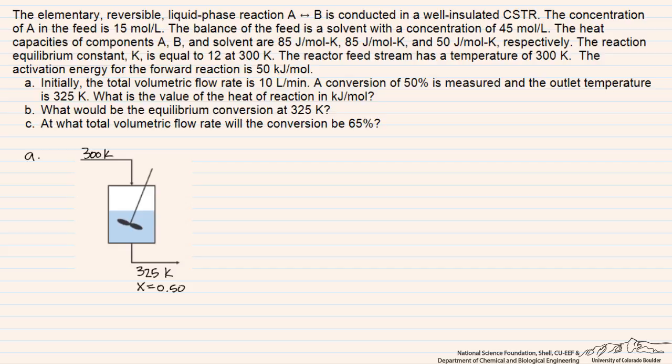We can write an energy balance for an adiabatic reactor in the following form. Here we have the sum of θ_i·C_Pi over the negative heat of reaction times the temperature difference between the inlet and outlet stream. The heat of reaction is what we want to solve for. We have a 25 K temperature difference between the inlet and outlet streams, which leaves us with this sum of θ_i·C_Pi term.